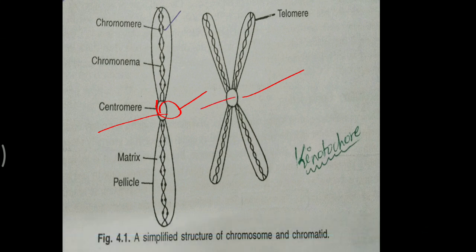Centromeres are also called primary constriction or kinetochore. Centromere has four important functions: orientation of chromosomes at metaphase, formation of chromatids, chromosome shape, and movement of chromosomes during anaphase. These are the important functions of centromere present in the chromosome.